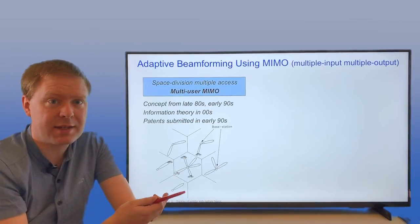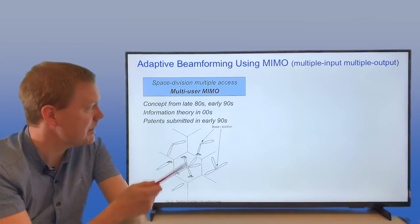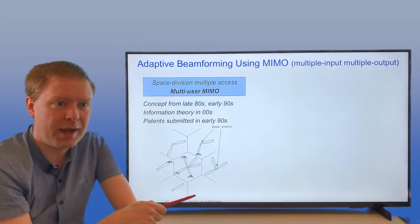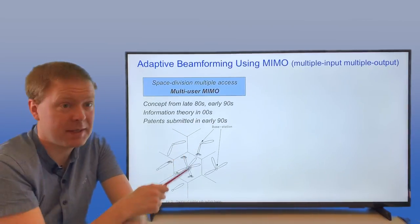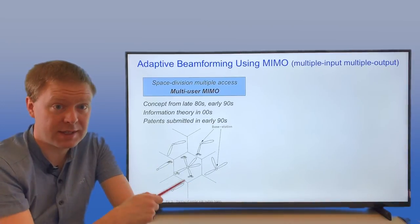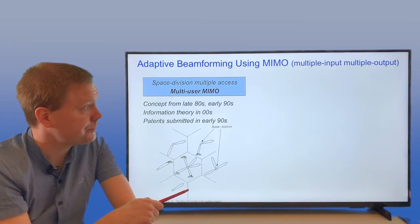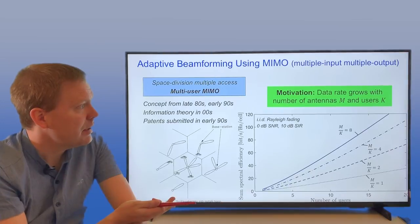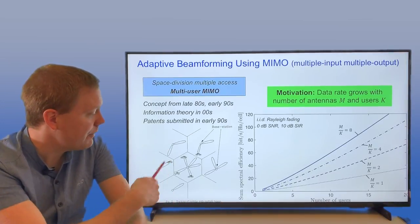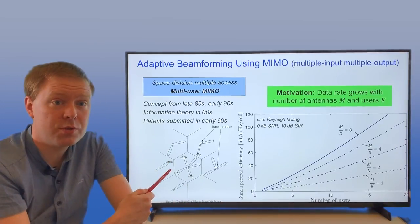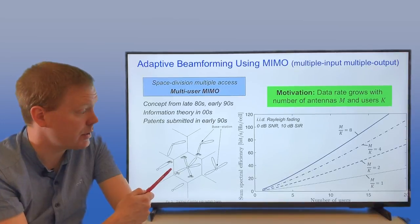Information theory describing how you would optimize this goes back to the early 2000s, and there are patents submitted in the early 90s about using this in cellular communications. The motivation is that the data rate that you can deliver within your cell grows as you increase the number of antennas and users.